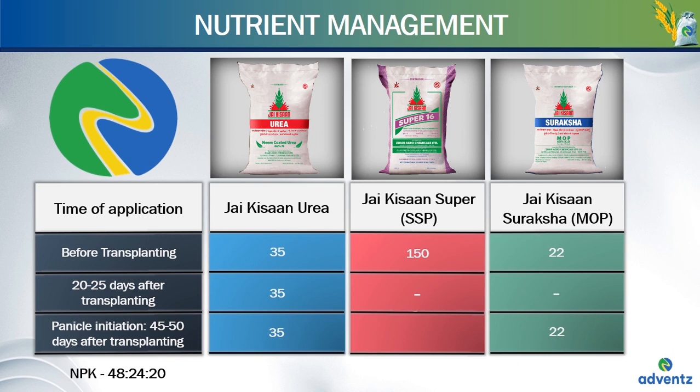Urea is needed again at 20 to 25 days after transplantation at 35 kgs per acre. At this time, there is no requirement of Jai Kisan Supar, SSP or Jai Kisan Suraksha. At the time of panicle initiation, which is 45 to 50 days after transplanting, Urea requirement is again 35 kgs per acre and there is no requirement for Jai Kisan Supar or SSP. The requirement of Jai Kisan Suraksha at the panicle initiation stage is 22 kgs per acre.